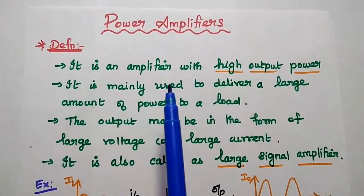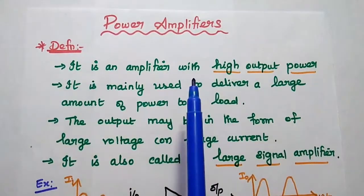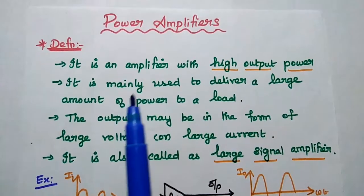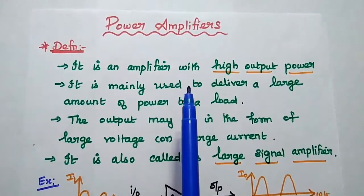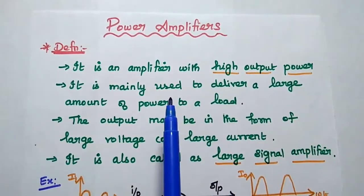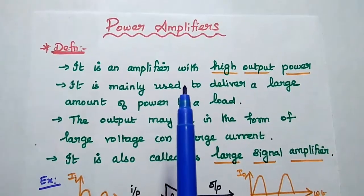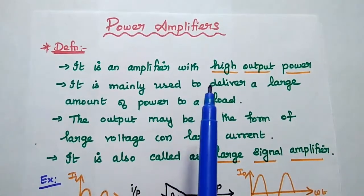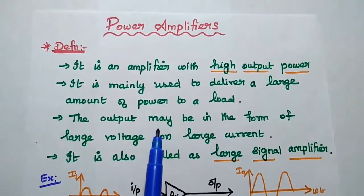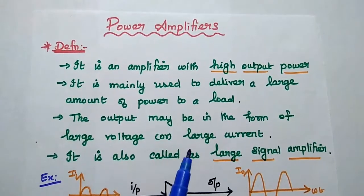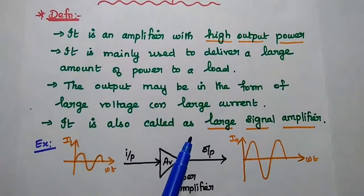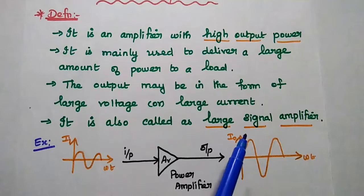Dear students, now we are going to discuss power amplifier and its types. Let's start with the definition. It is an amplifier with high output power. From the name itself, we come to know that power amplifier can produce maximum amount of output power. This output may be in the form of large amount of voltage or large amount of current. Power amplifier is also referred as large signal amplifier.